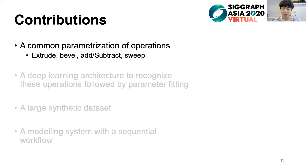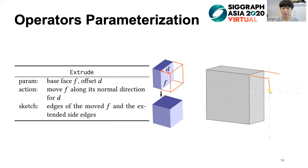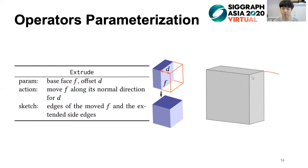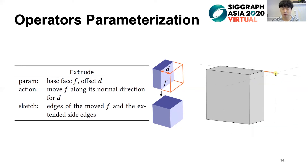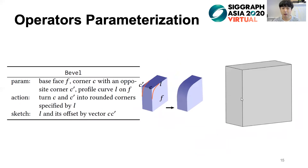Let's go through the operator parameterization one by one. Instead of tedious gestures, we allow users to draw the complete parts of the shape. For extrude, as shown in the example, users draw the edges of the mold-face f and the extended side edges, colored in orange. To apply the extrude operator, we need to find the base-face f and the offset-distance d from the user strokes. For bevel, users draw curve L and its offset representing the rounded corner. The base-face f, corner c with an opposite corner c', and profile curve are needed to apply the bevel operator.